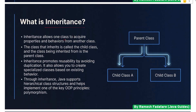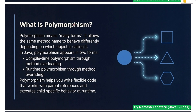What is inheritance? Inheritance allows one class to acquire properties and behaviors from another class. The class that inherits is called the child class, and the class being inherited from is the parent class. Inheritance promotes reusability by avoiding duplication and allows you to create specialized classes based on existing behavior. Through inheritance, Java supports hierarchical class structures and helps implement polymorphism.